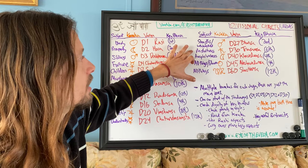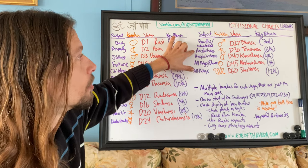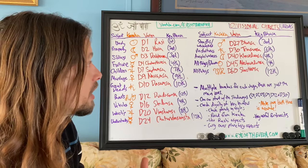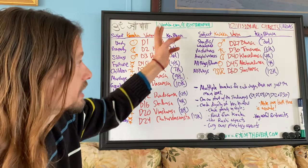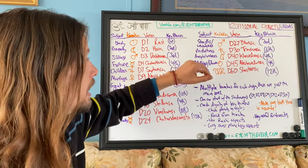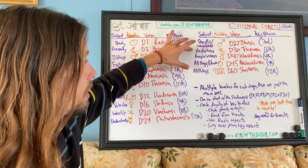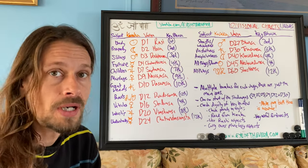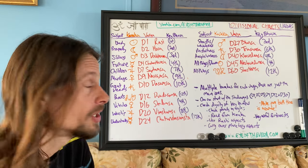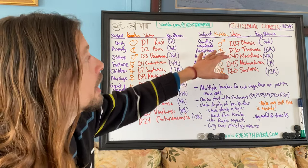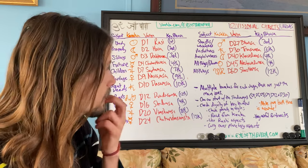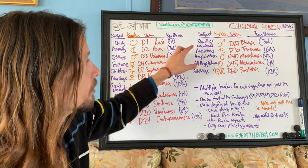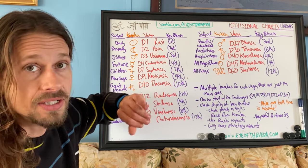The D30 is a very important Varga for health, difficulties, and the overall path of the body. Many things you'd look at in the Rashi chart should be double-checked in the D30. Parashara calls it the chart of arishtas — meaning misfortunes or bad karma. The sixth house, the house of obstacles, is what you want to look at, making this the Varga for the most difficult things that are going to happen.